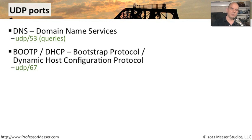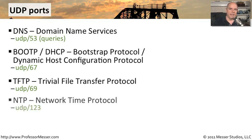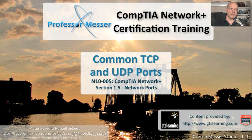There are also a couple of transfer protocols on the UDP side. TFTP — the Trivial File Transfer Protocol — is a much simpler way of transferring files and uses UDP port 69. When your machine updates its clock, it uses the Network Time Protocol (NTP) over UDP port 123. And finally, SNMP — the Simple Network Management Protocol — is used behind the scenes by network administrators to gather statistics from devices on the network, and it uses UDP port 161.